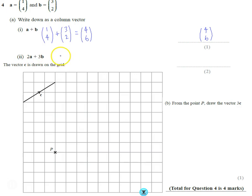For part (ii), 2a + 3b, let's write it out: 2 lots of our a vector plus 3 lots of our b vector. We multiply it out - for the first vector, 2 times 1 and 2 times 4, that's (2, 8). Add on our second vector: 3 times 3 which is 9, and 3 times 2 which is 6, giving us (9, 6).